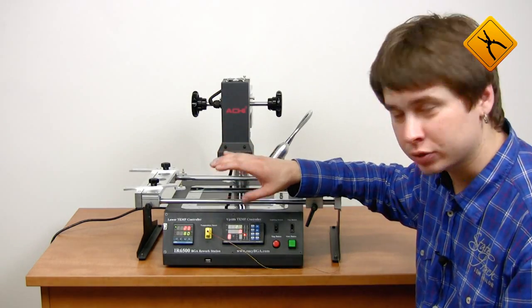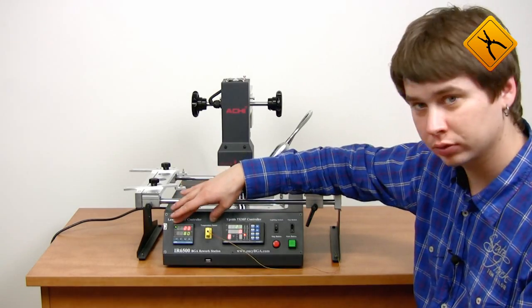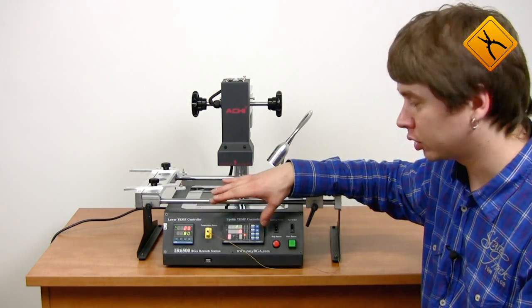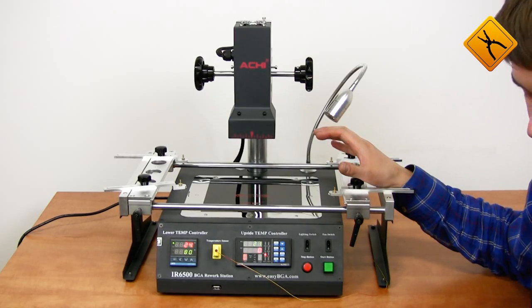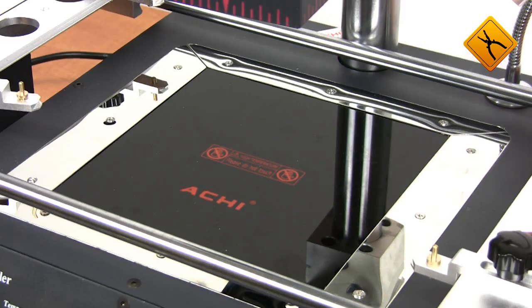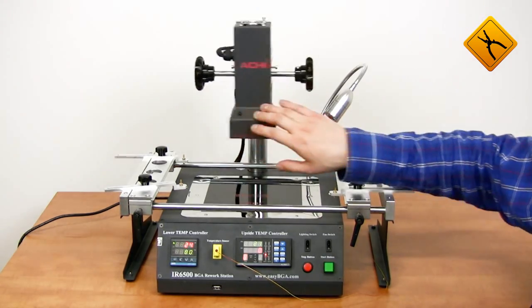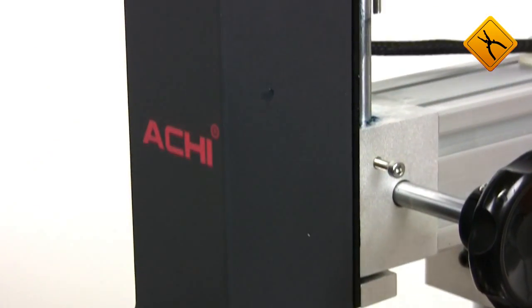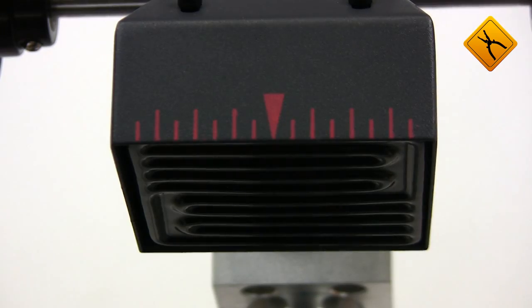This soldering station uses the same type of temperature controllers as other Archie models. Heating element parameters are also similar to the previous IR6000 model. The lower heater size is 180 by 180 mm. Its power is 800 Watt. The upper heater size is 80 by 80 mm and the power is 400 Watt.